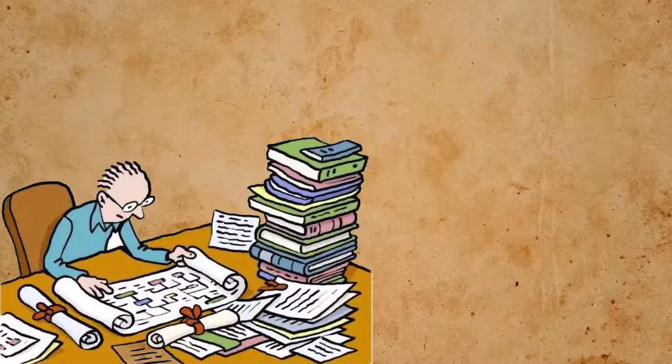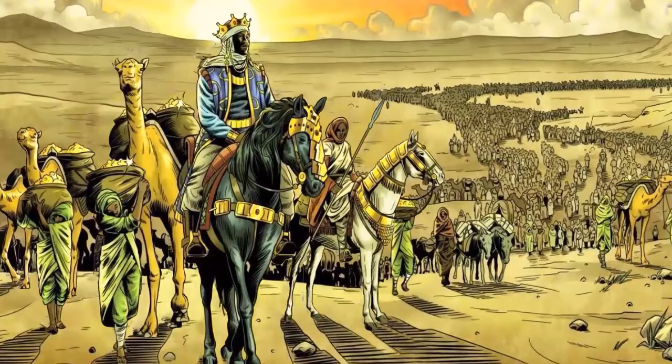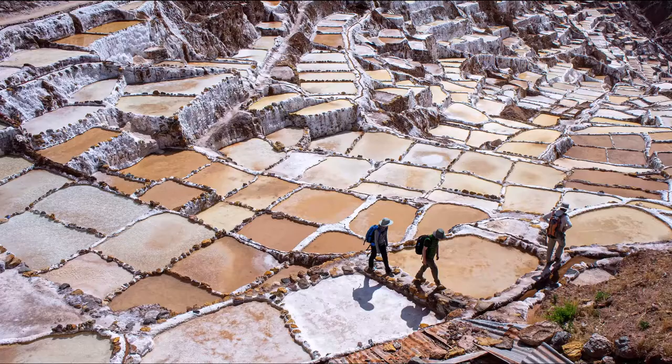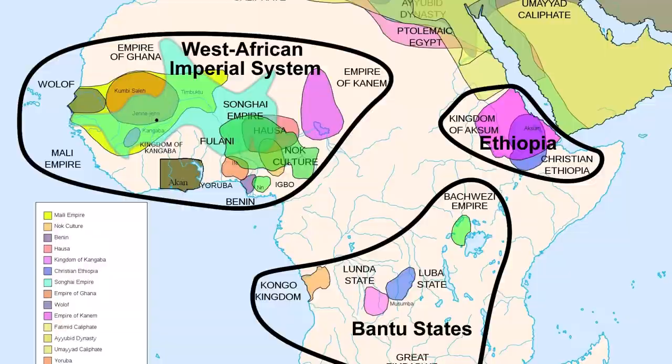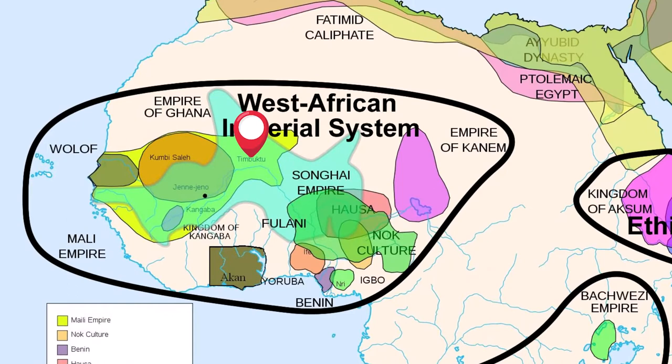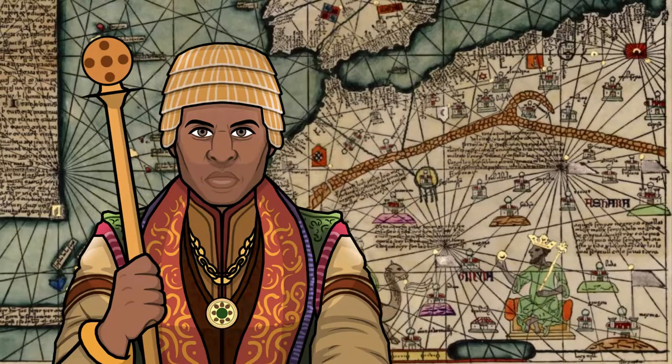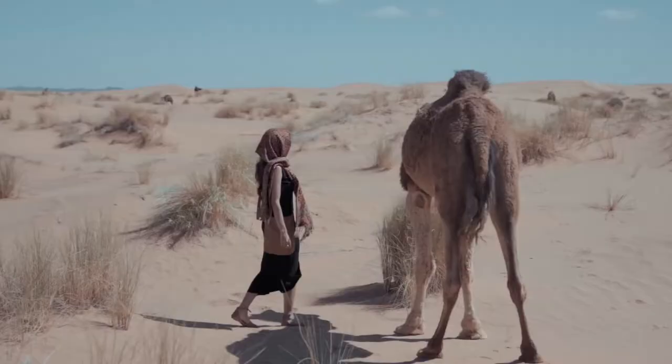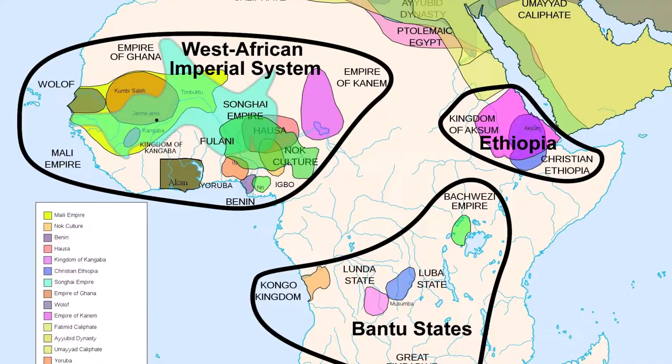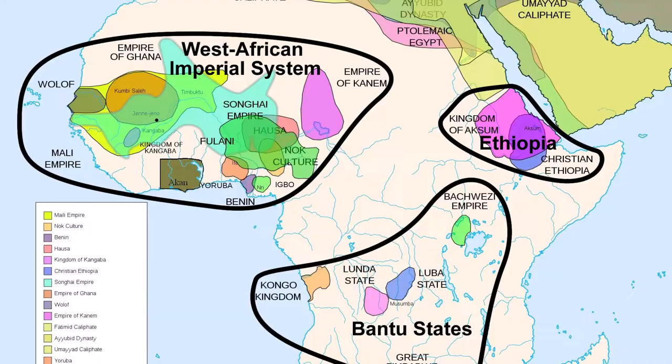Some historians estimate that Mansa Musa may have been the wealthiest person in history. The great wealth of Mali came from gold and salt mines. The capital city of the empire was Niani. Other important cities included Timbuktu, Gao, Djenne, and Walata. The Mali Empire controlled important trade routes across the Sahara Desert to Europe and the Middle East. The city of Timbuktu was considered a center of education and learning and included the famous Sankore University.